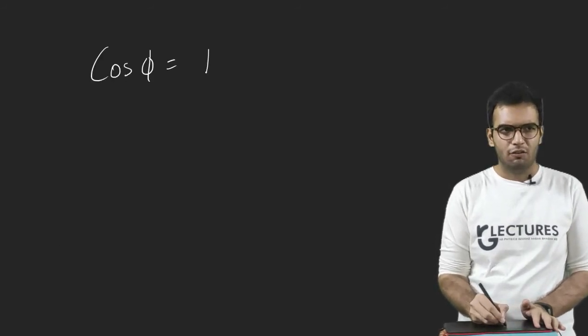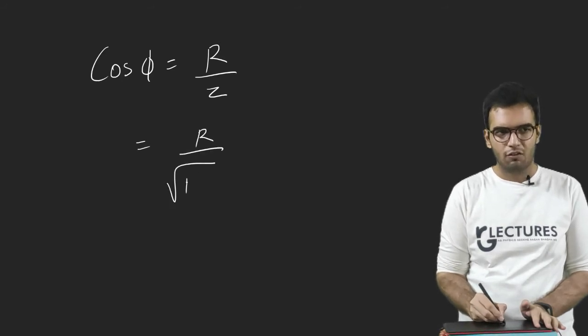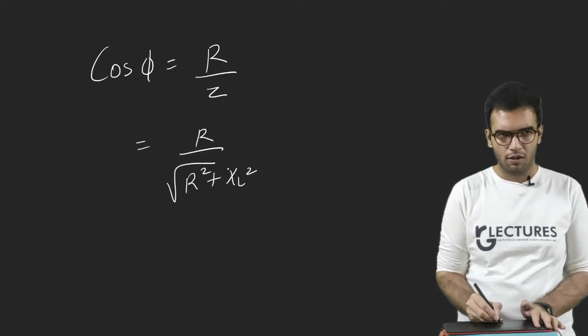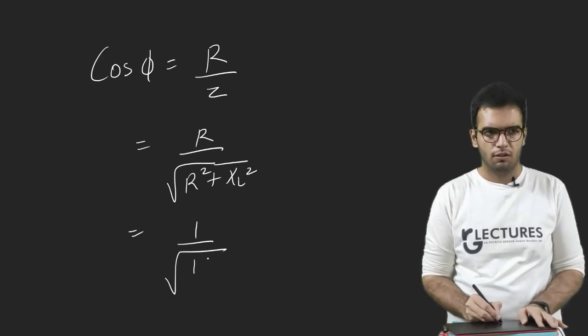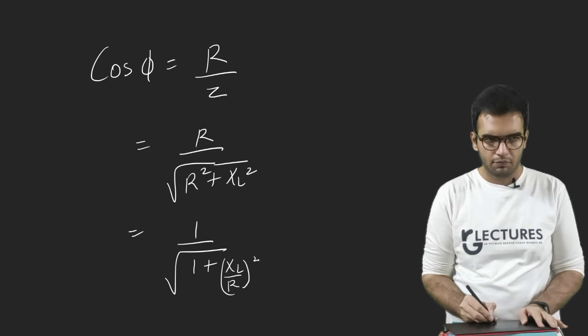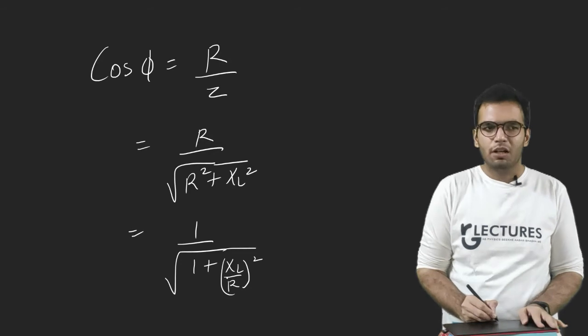Also, cos φ is defined as R by Z. And Z here in this case is R² + XL². Dividing throughout by R, we will get 1 upon 1 plus (XL/R)² whole square. R is very small, so this term will nearly become infinite.